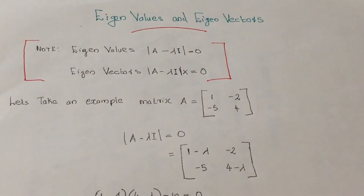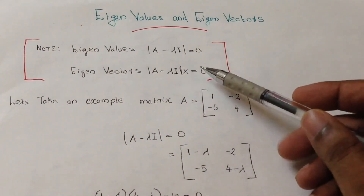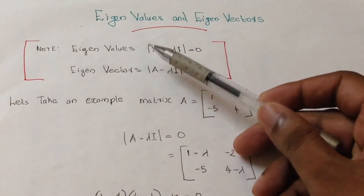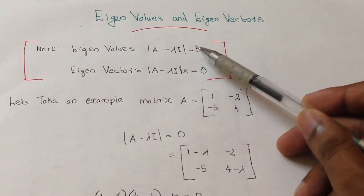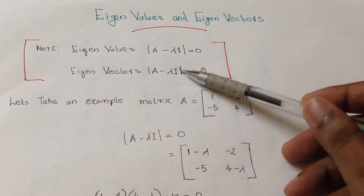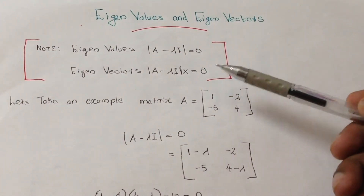Hi folks, welcome to my video on eigenvalues and eigenvectors. The important equations we have to remember: for eigenvalues, determinant of A minus lambda I is equal to 0. For eigenvectors, the matrix A minus lambda I into x is equal to 0.